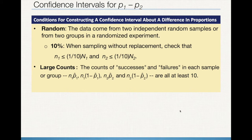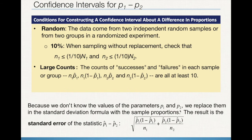Once we've done our state, we're into the planning section — we need to check if conditions are met. There are three conditions: first, as always, randomization; second, the 10% condition needs to be fulfilled in both population distributions; third, the large counts condition needs to be fulfilled in both original population distributions. Be explicit about these calculations and state them all. When we find the standard error for this scenario, we aren't going to know the parameters of interest because we're dealing with a confidence interval — that's the whole point. So we calculate standard error using the sample proportions in both populations divided by their respective sample sizes.